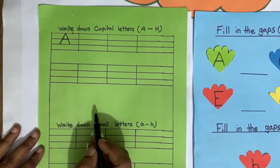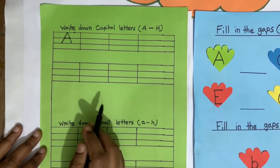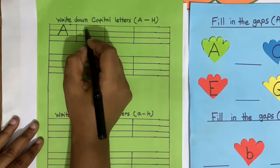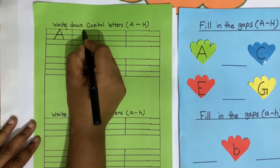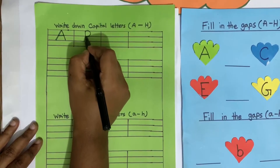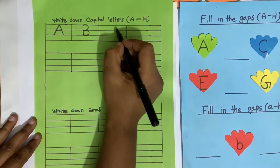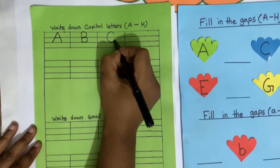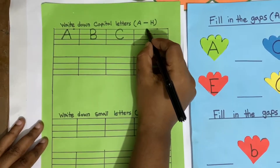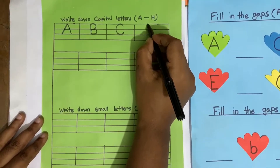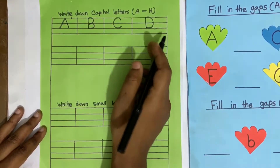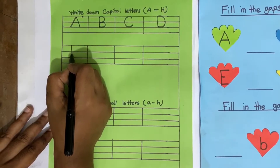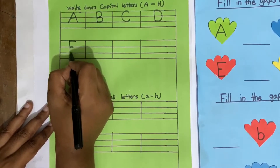A. And do you know which one is after letter A? Yes — letter B. Good. And after B? C. After C? D. And after D? Letter E. Excellent.